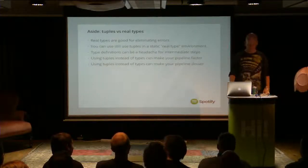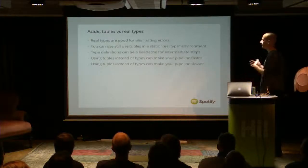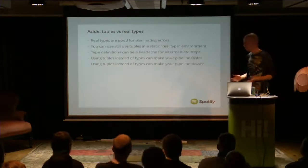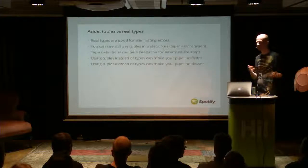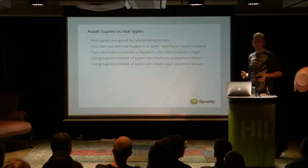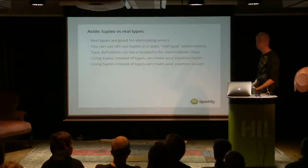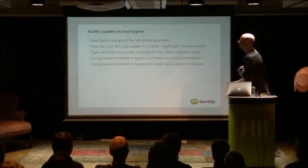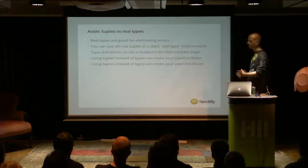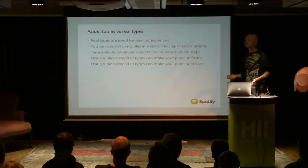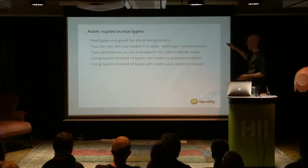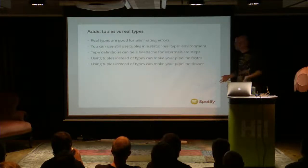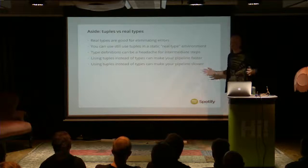I want to make clear the main difference between the Cascading family and the Crunch family: it's whether you're using tuples or real types. You've seen a lot of the differences in how you construct your jobs based on whether you're using named tuples or real types. You can eliminate a huge category of errors by having your real types present all the way through. If you're using something like Crunch, your working type can still be a tuple type — you can create your own ordered dictionary of fields — but you can only mix them in a statically typed environment.